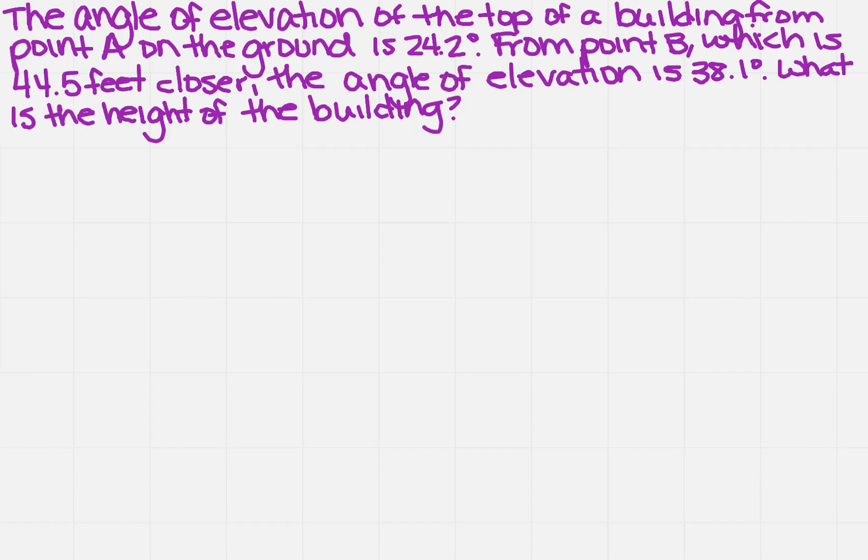The angle of elevation of the top of the building from point A on the ground is 24.2 degrees. From point B, which is 44.5 feet closer, the angle of elevation is 38.1 degrees. What is the height of the building?